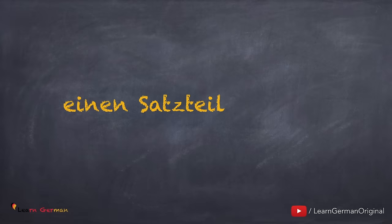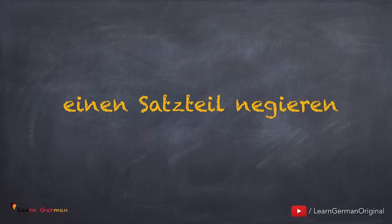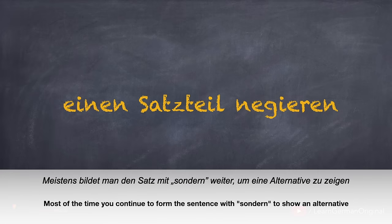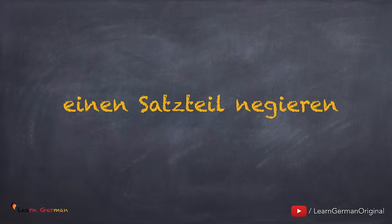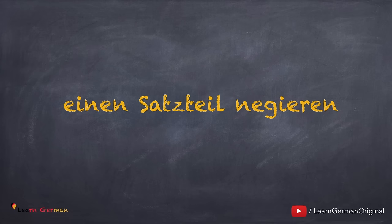Man kann auch einen Satzteil negieren. NICHT steht vor dem Teil, der negiert werden muss. Meistens bildet man den Satz mit 'sondern' weiter, um eine Alternative zu zeigen. Die unterstrichenen Wörter werden betont.